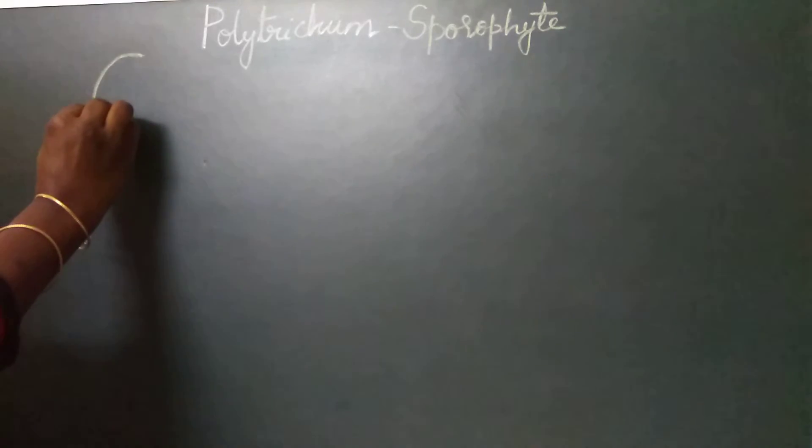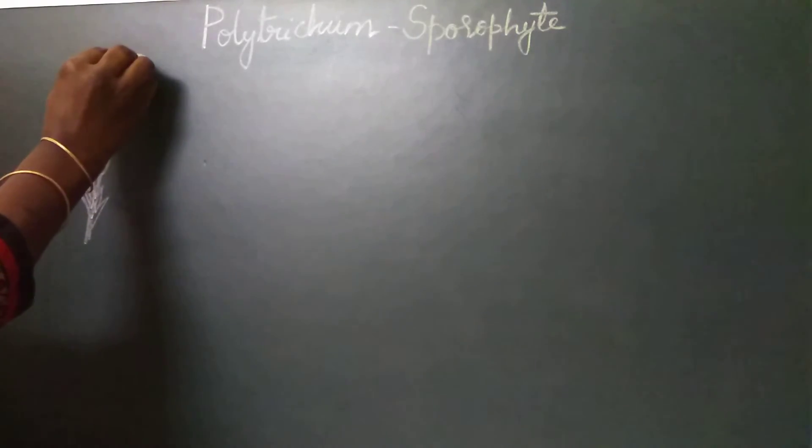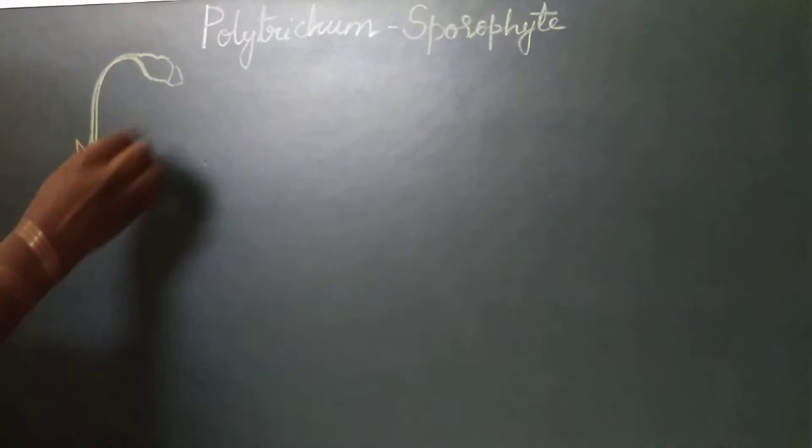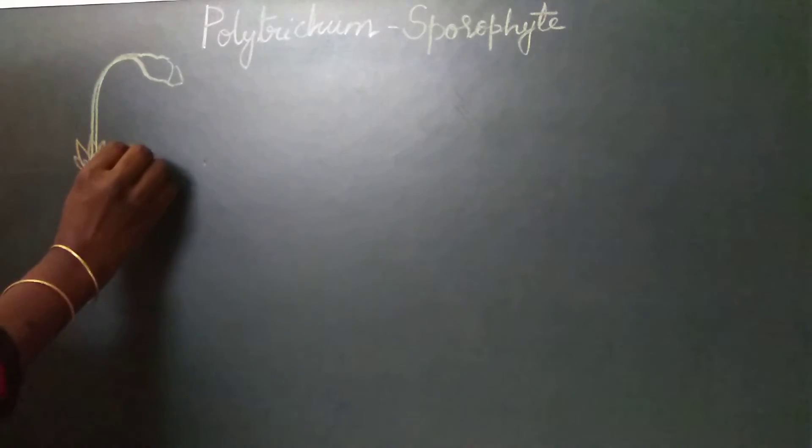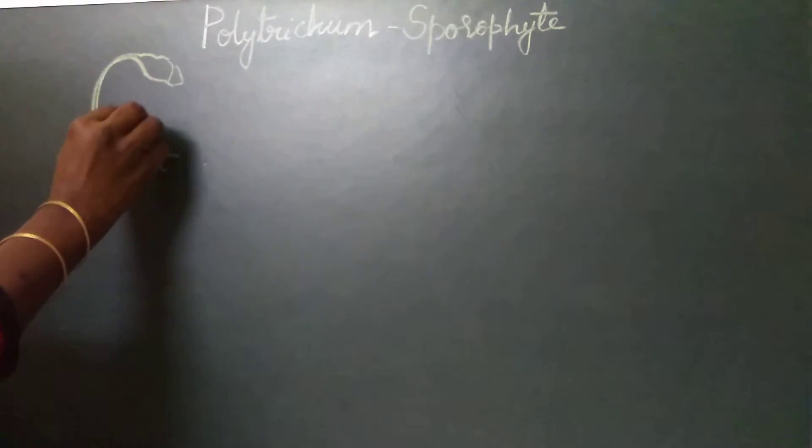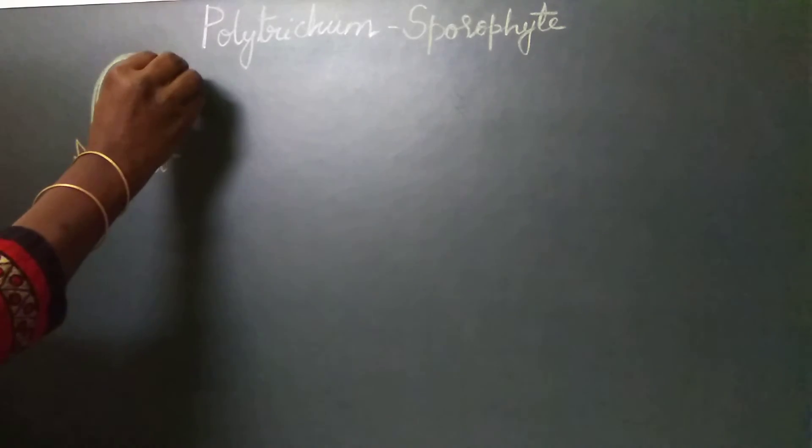The sporophyte of Polytrichum has three distinct regions: one is the foot, seta, and the capsule.